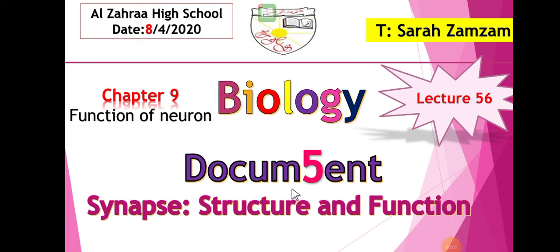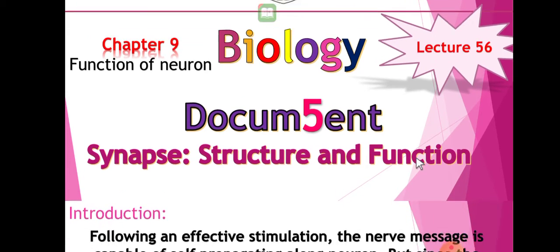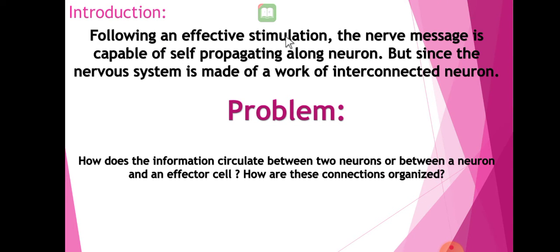Good morning dear students. Today in lecture 56 we are going to start a new document — Document 5: The Synapse: Structure and Function. Introduction: following an effective stimulation, the nerve message is capable of self-propagating along the neuron, from the axon hillock to the terminal knob or terminal arborization. But since the nervous system is made of a network of interconnected neurons, the problem is: how does the information circulate between two neurons or between a neuron and an effector cell?